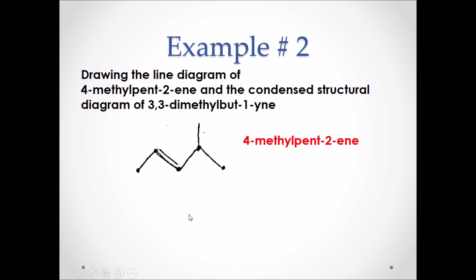Here is our line diagram. Starting from the back of the name, pent-2-ene — that represents we have a five-carbon chain: one, two, three, four, five. And that double bond is coming off the second carbon in the chain. Then we have a methyl branch, a single carbon branch, coming off the fourth carbon in the chain: one, two, three, four. And we've drawn our methyl branch.